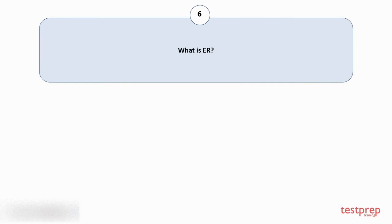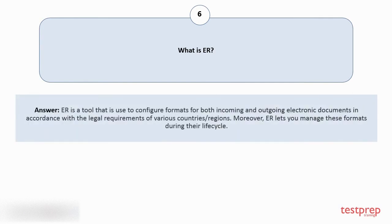Question number 6: What is ER? ER is a tool that is used to configure formats for both incoming and outgoing electronic documents in accordance with the legal requirements of various countries or regions. Moreover, ER lets you manage these formats during their life cycle.